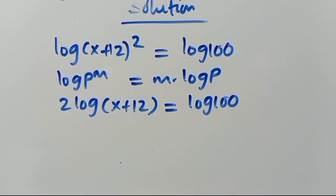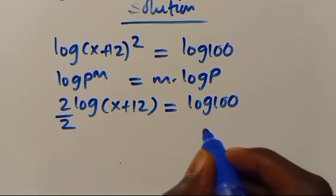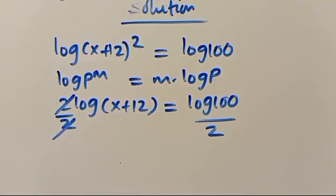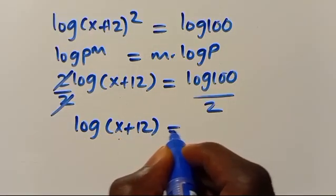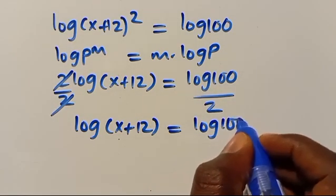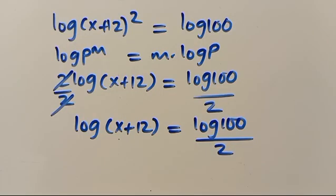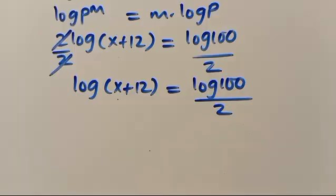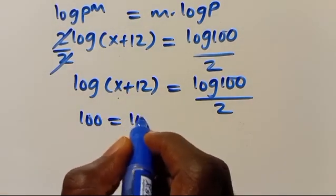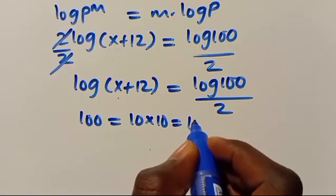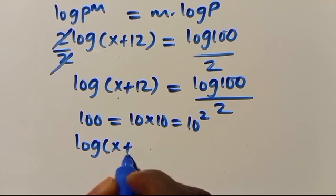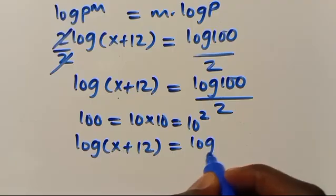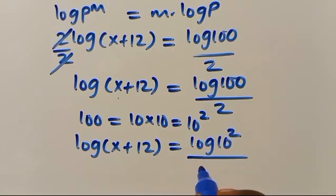From here, let's divide both sides by 2. So when we divide, we cancel out the 2. So we have log of x plus 12 equals log 100 over 2. Mind you, we can have 100 as the product of 10 times 10, which equals in base 10 as 10 to the power of 2. So we have log of x plus 12 equals log 10 to the power of 2 over 2.